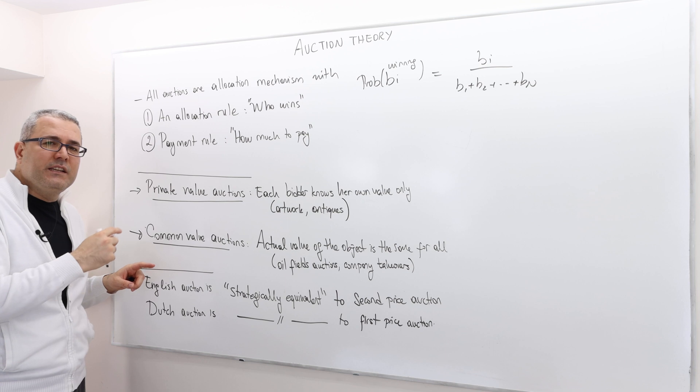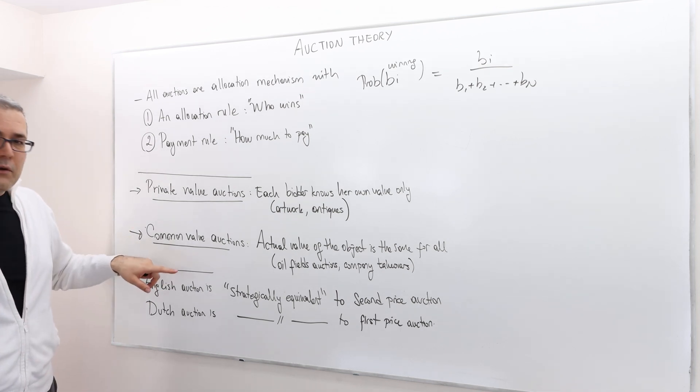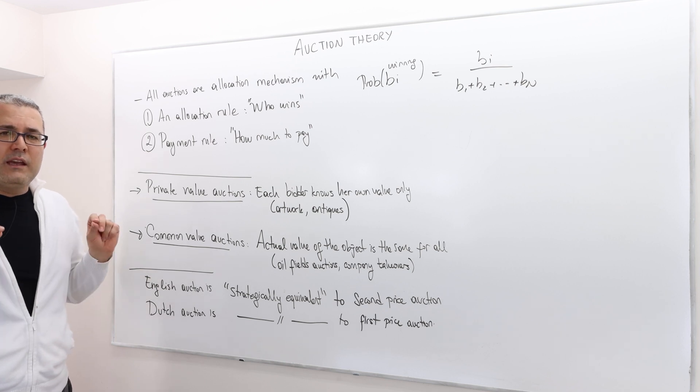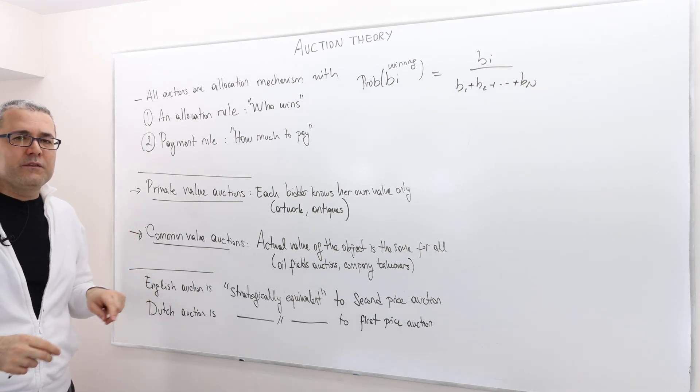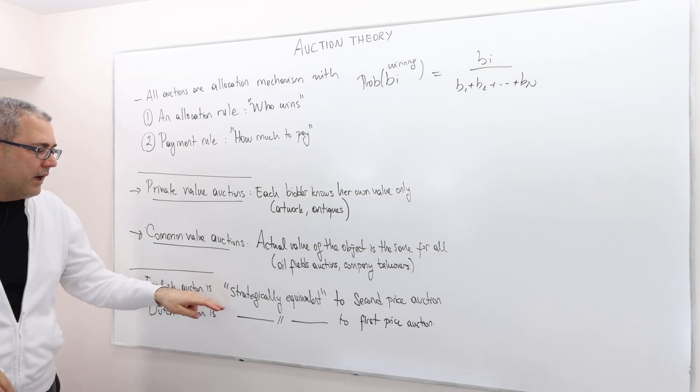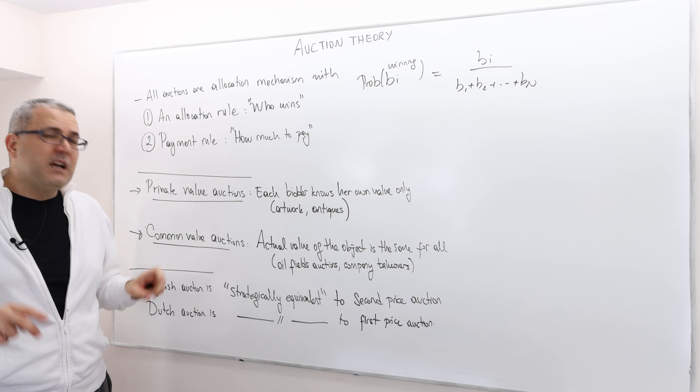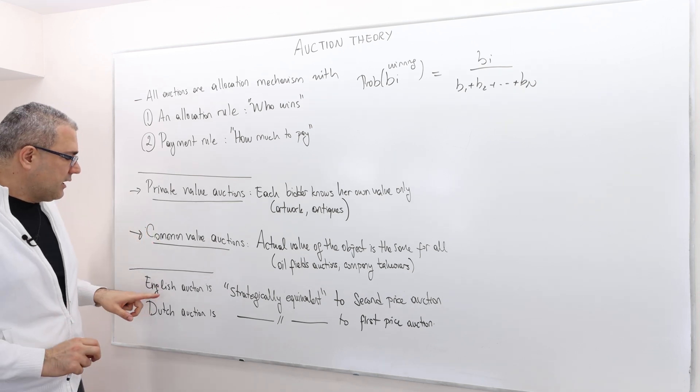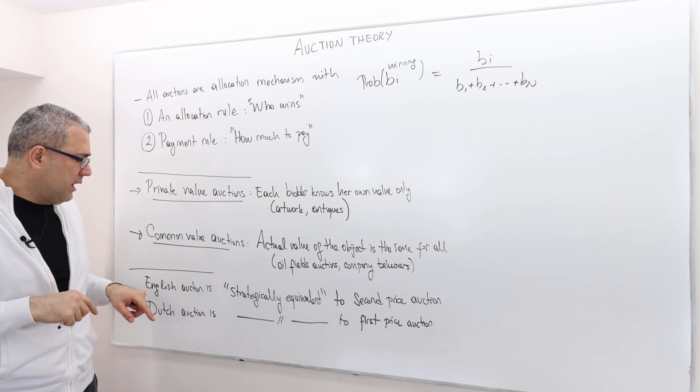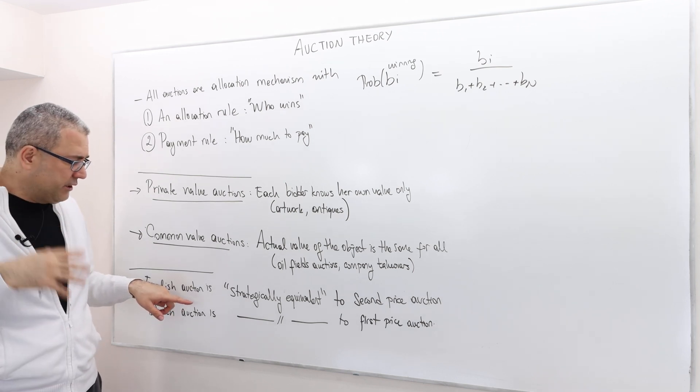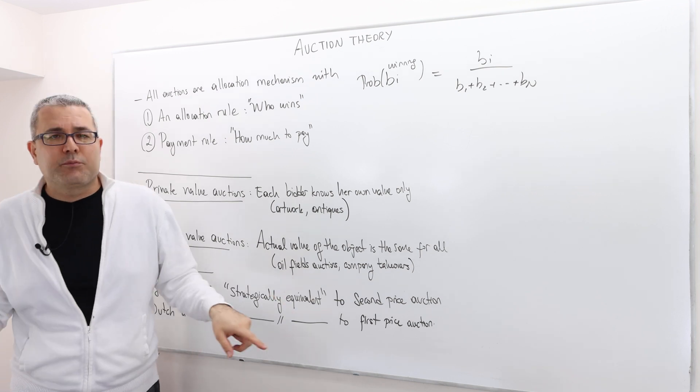Again, I'm going to talk about the details of our model in the next episode. But before going there, I would like to make sort of a remark and later I'm going to sort of open that up, this quote unquote statement, strategically equivalent. So, English auction, remember, ascending auction, ascending bid auction or English auction is strategically equivalent to second price auction.